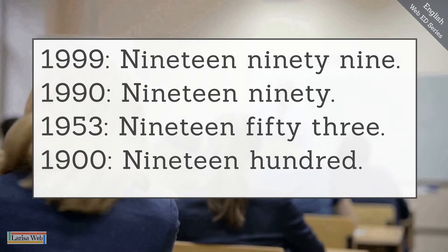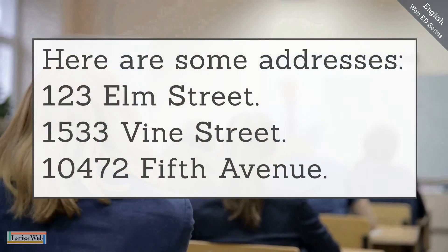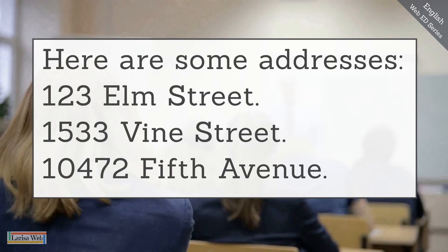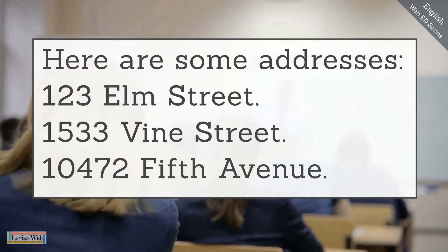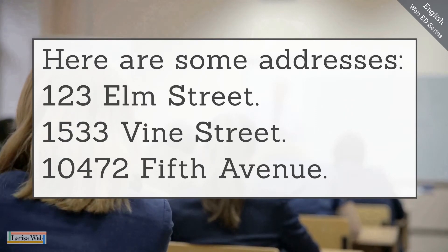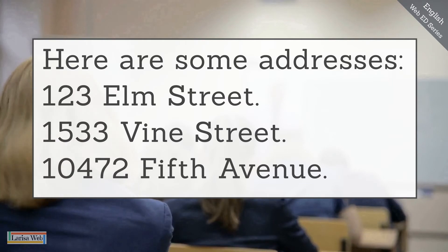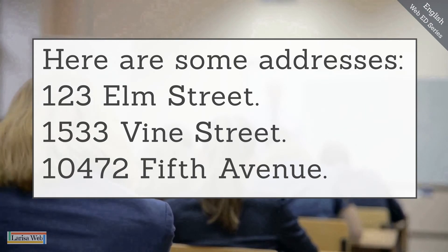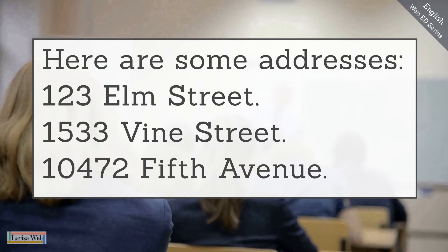These are just a few examples of how we would pronounce years. Here are some addresses: one, two, three Elm Street — I could say 123 Elm Street, and people do that, but it might be more common with three numbers to say 'one-two-three Elm Street.' 1533 Vine Street. When we use the teens — 13, 14, 15 — we often use that number first and then add the rest. For a long number like 10472 Fifth Avenue, you would actually pronounce each number individually.